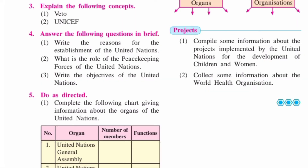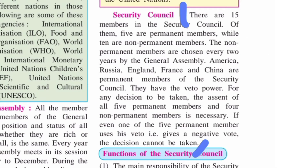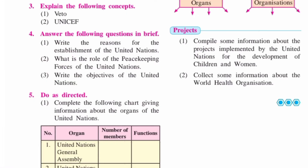Question Number 3: Explain the following concepts. First one — Veto. The answer is given on page number 79. From 'there are 15 members in the Security Council' till 'the decision cannot be taken,' you have to write that portion.